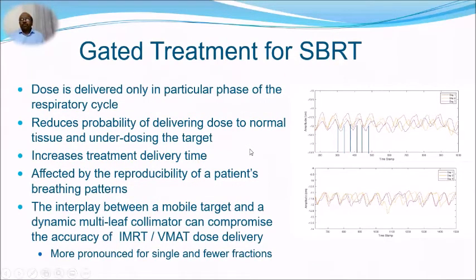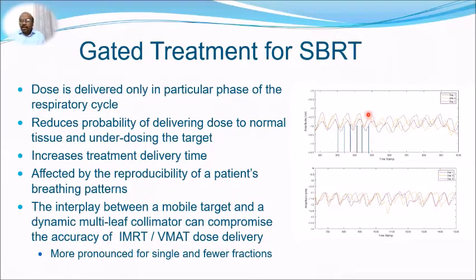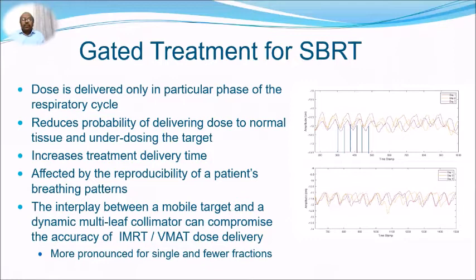Gated treatment is another option for SBRT. In gated treatment, the dose is delivered only during a particular phase of the respiratory cycle. The beam is on only when the patient's breathing reaches the designated phase; during the rest of the breathing cycle the beam is off. This reduces the probability of delivering dose to normal tissue or under-dosing the target, but it increases delivery time because the system waits for the patient's breathing to return to the correct phase.